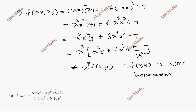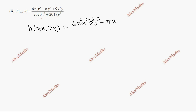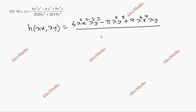Subdivision 2: we have h of x, y. Procedure — we have h of lambda x, lambda y. Substitute x and y. First term: x squared becomes lambda squared x squared, y cubed becomes lambda cube y cubed, minus pi times y to the power 5 becomes lambda to the power 5 times y to the power 5, plus 9 x to the power 4 becomes lambda to the power 4 x to the power 4, y becomes lambda y.